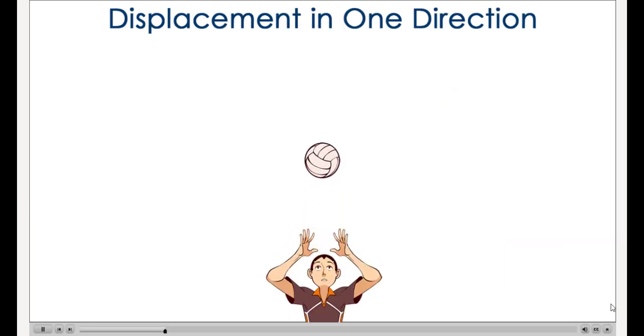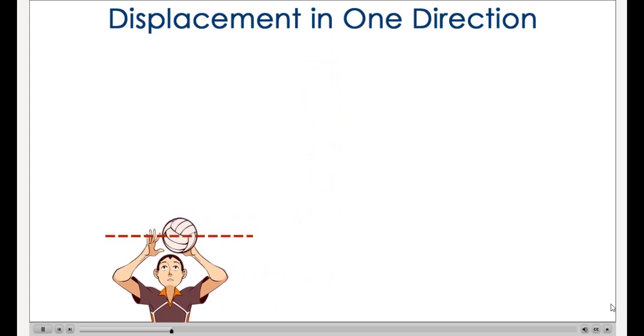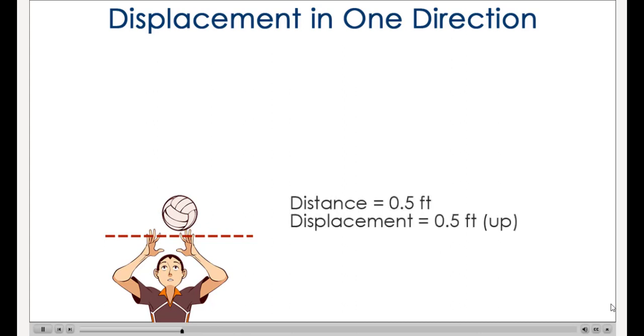Let's illustrate the difference between distance and displacement with a person setting a volleyball straight up in the air and catching it when it falls. At the beginning of the motion, the ball is stationary. Before the ball is thrown, the distance the ball has traveled and the displacement of the ball are both zero. When the volleyball player sets the ball, the ball moves straight up vertically. At first, the magnitude of the distance and displacement are the same.